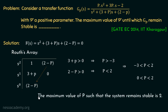So the maximum value of P such that the system remains stable is 2. If we increase P beyond 2, the term (2 − P) becomes negative, causing sign changes in the first column of the Routh array, and the system will become unstable. Therefore, P = 2 is the maximum value of P until which G_P remains stable, and P = 2 is the correct answer for this problem.